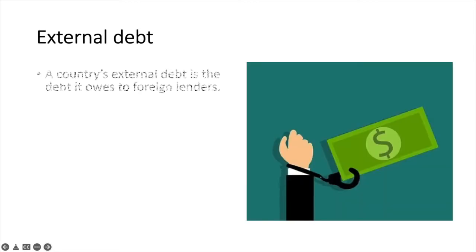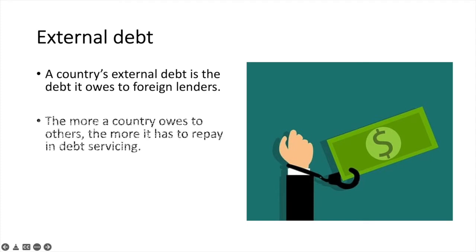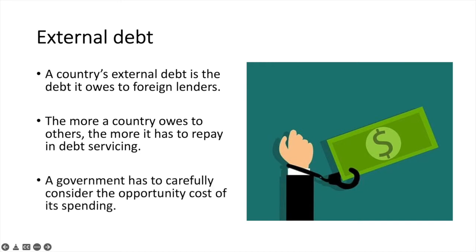A country's external debt is a debt it owes to foreign lenders. The more a country owes to others, the more it has to repay in debt servicing. Debt servicing is the process of paying back a debt over a period of time and includes both principal and interest payments on loans. So a government would have to carefully consider the opportunity cost of its borrowing and spending.